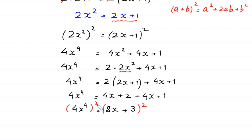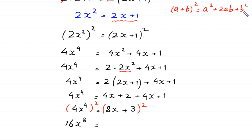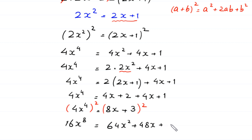The square of 4x to the power 4 is 16x to the power 8. According to the algebraic identity a plus b whole squared equals a squared plus 2ab plus b squared, this 8x plus 3 whole squared equals 64x squared plus 48x plus 9.